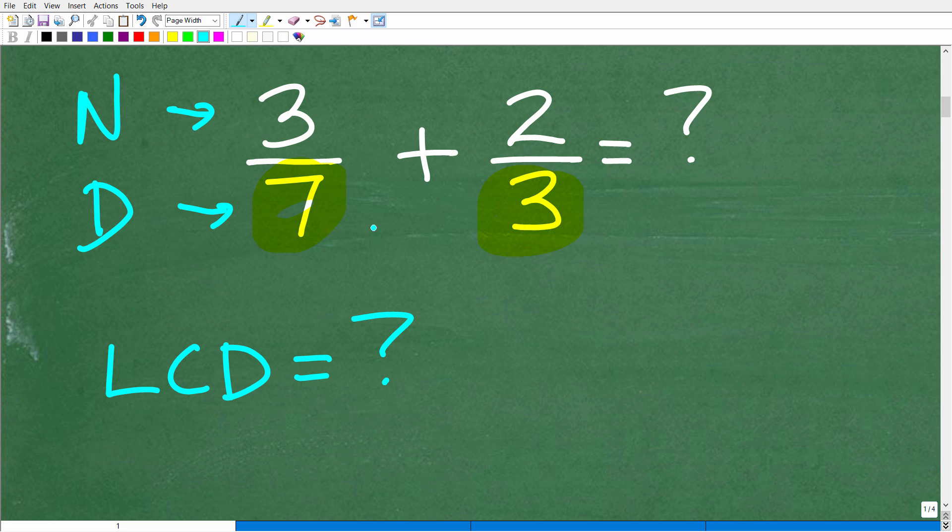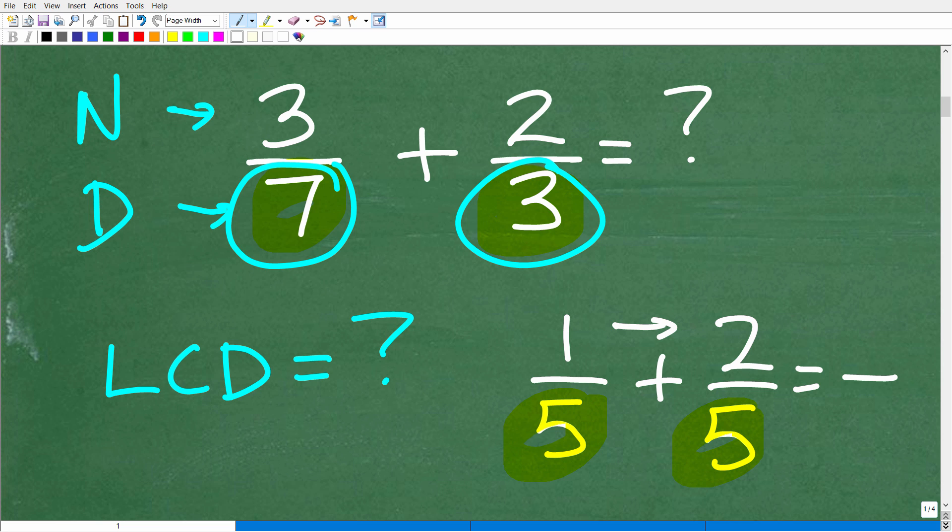We can't add or subtract fractions unless these bottom numbers are the same. For example, if I had 1/5 plus 2/5, I can add these fractions together because the denominators are the same value. All we have to do is add the numerator. So 1 plus 2 is 3, and we just put that over 5. The answer is 3/5.